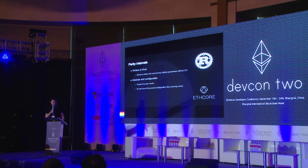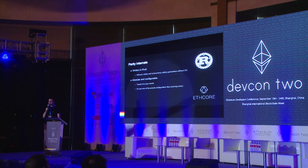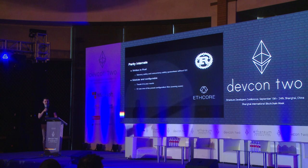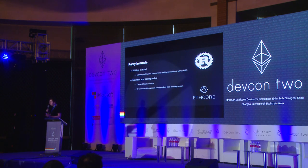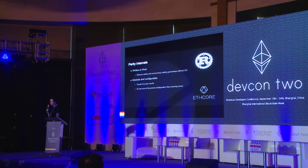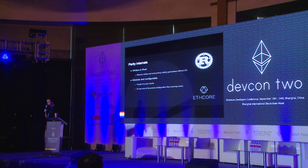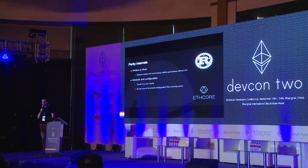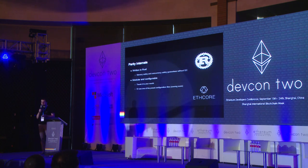Parity is written in Rust. Rust is a relatively new programming language which is particularly well suited for system programming and building fast and reliable software. It has memory safety and concurrency safety guarantees, all without sacrificing performance. It works very well for blockchain applications where reliability and speed are equally important. For all the developers out there, I would greatly recommend to take a look into it. And it's also one of the reasons we believe Parity is the fastest Ethereum client out there.